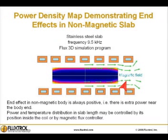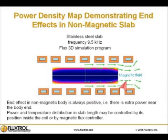Power density map demonstrating end effects in a non-magnetic slab. End effect in a non-magnetic body is always positive — there is extra power near the body end. Power and temperature distribution along slab length may be controlled by its position inside the coil or by a magnetic flux controller.